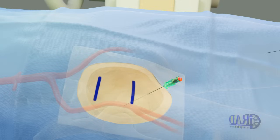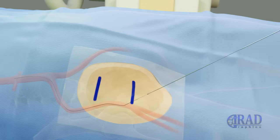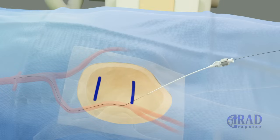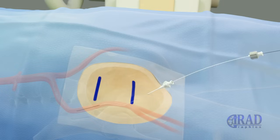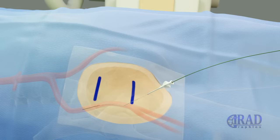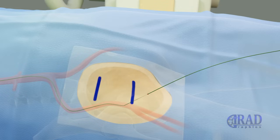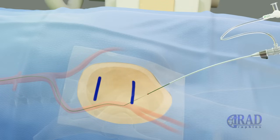Once blood return is noted, a microwire is advanced through the needle into the common femoral artery. Then the needle is exchanged for a transitional sheath, which is advanced over the microwire. The microwire and inner dilator of the transitional sheath are exchanged for a wire with larger diameter and longer length, which is advanced through the transitional sheath into the aorta. Then the outer layer of the transitional sheath is exchanged for a vascular sheath.